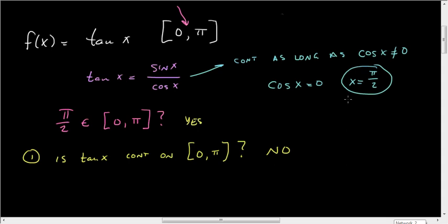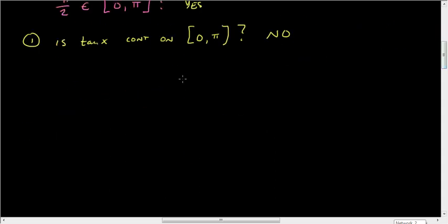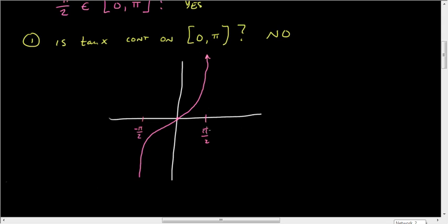And if you recall the graph of tangent at π over 2, and this is another way to do it, you can shove it in your calculator and take a look at it that way. But at π over 2, this is π over 2, this of course is zero, and this is negative π over 2. Tangent comes up like this from negative infinity, crosses over at zero, and comes up and goes to infinity as it approaches π over 2.